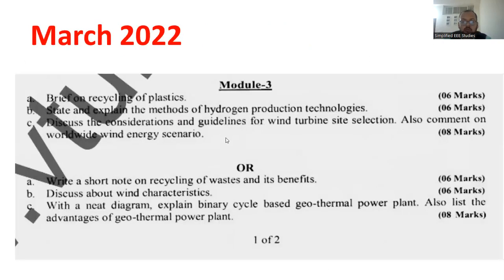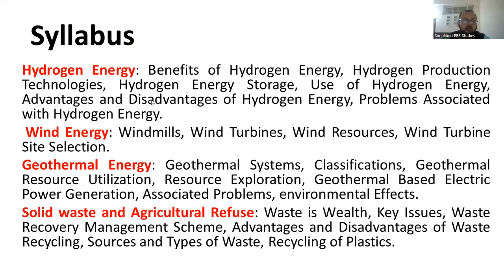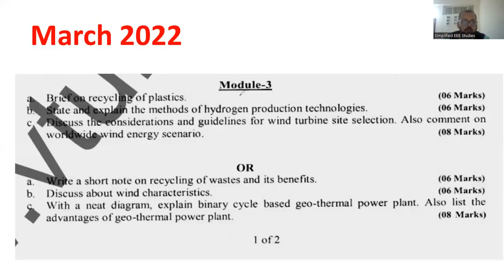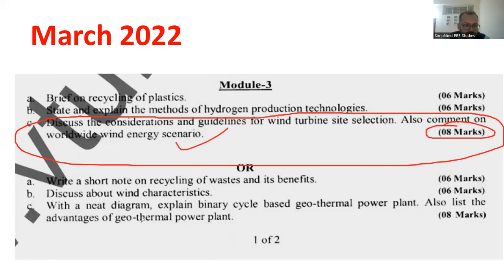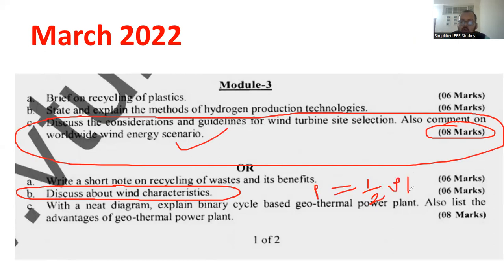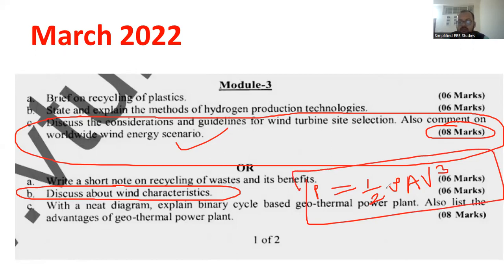Now I am going to focus on wind energy. The first very important question is: discuss the considerations and guidelines for the wind turbine selection, and also comment on the world wind energy scenario — it carries the weightage of 8 marks, 4 plus 4 division. Another important topic is wind characteristics. Whenever you are explaining wind characteristics, you have to explain the equation: wind power P = ½ρAV³. This equation is very important.